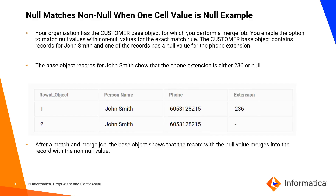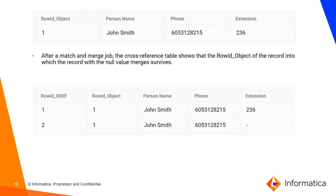Let's take an example of null matches not null where one cell value is null. We are taking customer as a base object and we have two records. For row ID object 1, the phone extension is 236, and for row ID object 2, the extension code is null. When we run match and merge job, since we have configured null matches non-null, these two phone extensions will get merged with each other. In the base object, we will have one merged record, and in the cross-reference table, we will have two records having the same row ID object.